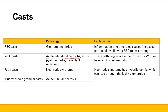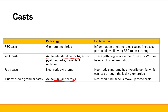Next is muddy brown granular casts. These arise from acute tubular necrosis — basically necrosis of cells in the renal tubules. These renal tubular cells make up these casts, and they're going to look like a muddy brown color. A picture will be shown in the acute tubular necrosis lecture.